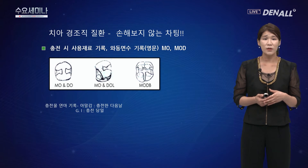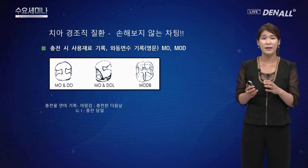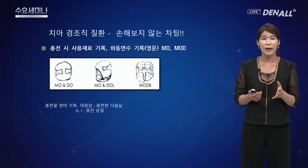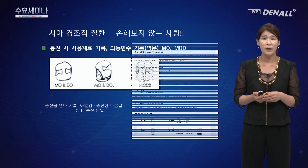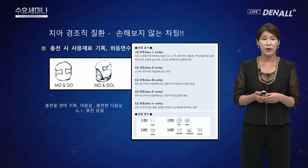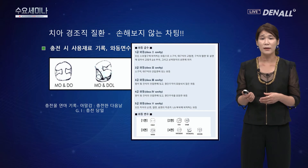충전 시에는 1면, 2면, 3면, 4면 버튼이 있는데, 어느 부위에 어떤 면에 충치가 생겼는지 와동 면수를 차트에 반드시 기록해야 합니다. 광중합레진 충전의 경우에는 와동 급수까지 기록하게 되어 있습니다. 충전 후에는 충전물 연마도 차트에 기록이 되어 있어야 청구가 가능하며, 아말감은 익일 이후에, GI는 당일에도 연마가 가능합니다.